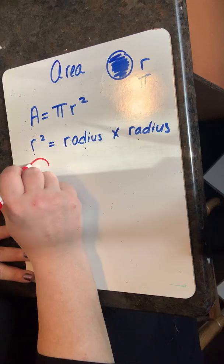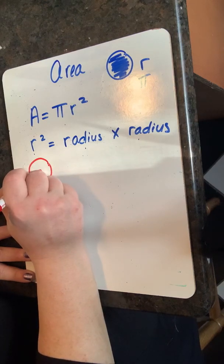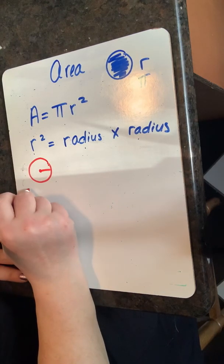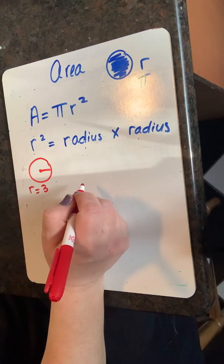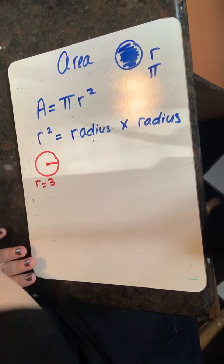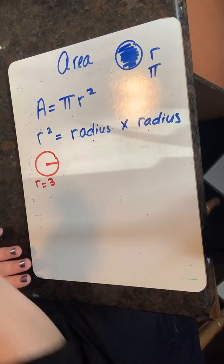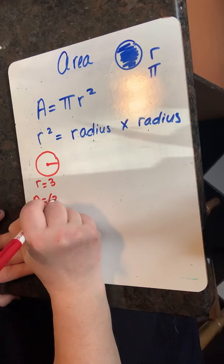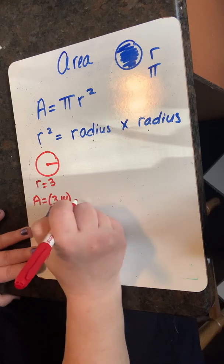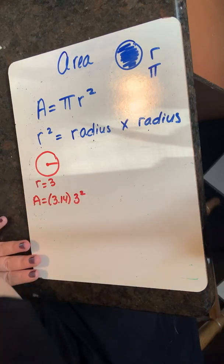We're going to find the area of a circle that has a radius of three. Vamos a encontrar el área de un círculo que tiene un radio de tres. We rewrite our equation plugging in the values. Reescribimos nuestra ecuación conectando los valores.